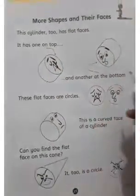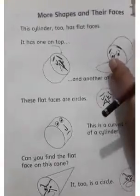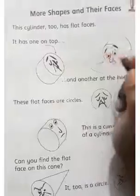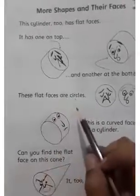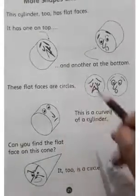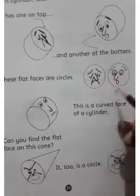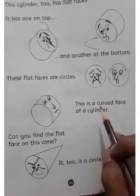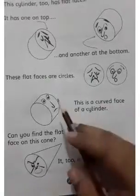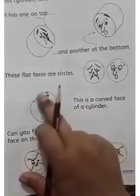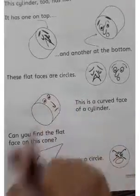And there is another flat face at the bottom. Both the bottom and the top are flat faces. These flat faces are circles, so their shape is actually a circle. The round outer part is the curved face of a cylinder.